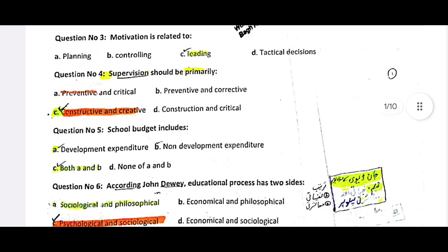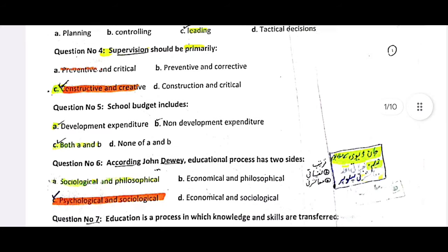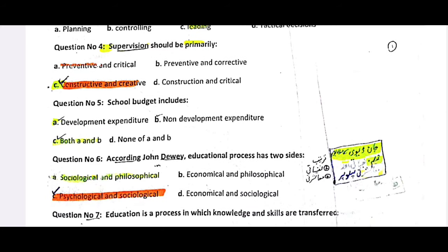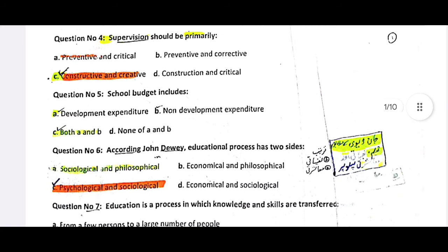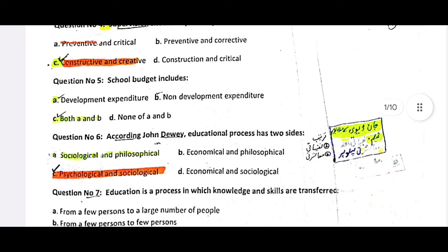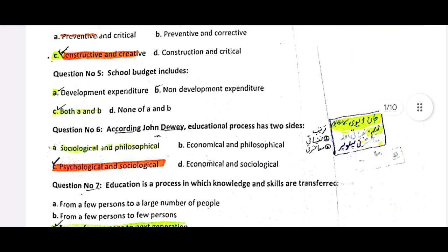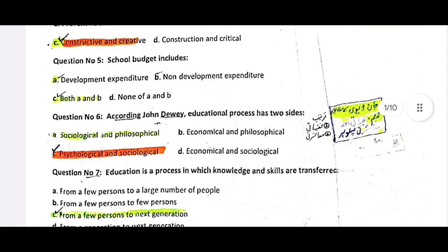The school budget includes development and non-development components — both are included. According to John Dewey, the educational process has two sides: the psychological aspect and the sociological aspect.